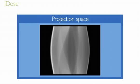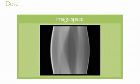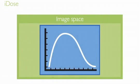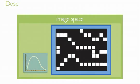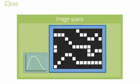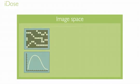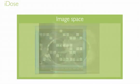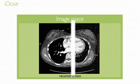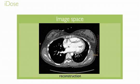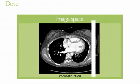These projections then transition to the image space where two models are created. The noise model is a statistical representation of the noise in the data. The anatomical model is a representation of the clinically relevant features of the dataset. Combining this information, Eidos iteratively removes the noise while retaining clinical data.